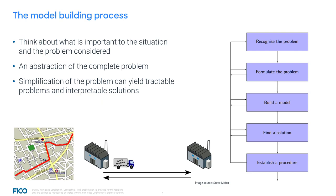In the model building process, we first must think about what is important for the situation and the problem under consideration. Then we strive to find an abstraction of the complete problem. For example, a concrete way of navigating through a system of roads with traffic lights could be abstracted to the notion of a shortest path in a graph. Simplifications can yield tractable problems whose solutions are still interpretable. The problem of finding a shortest path in a graph is clearly computationally tractable, and each solution can be interpreted in terms of the original problem by translating the abstract path into a concrete route through the system.